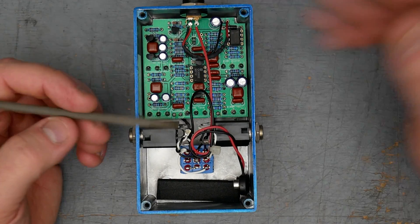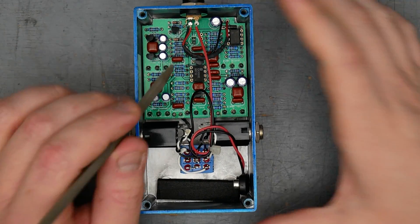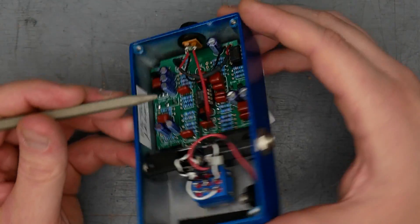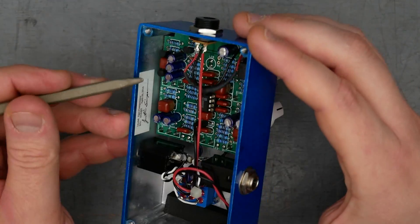The red capacitors are the Panasonic ECQV or something like that, film caps. The resistors are all metal film, quarter watt. Electrolytics are Nichicon electrolytics.